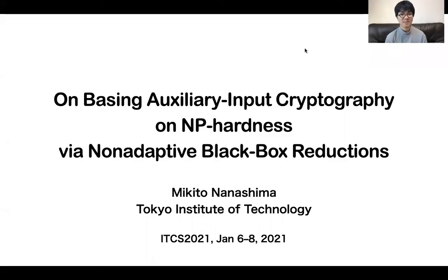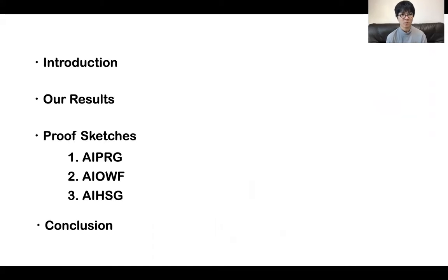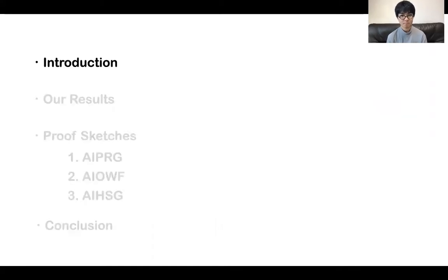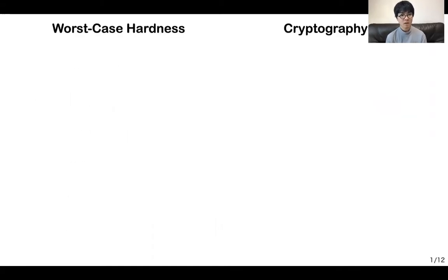Hello, my name is Mikito Nanashima. Today I'm going to talk about this topic: non-adaptive black box reductions for basing auxiliary input cryptography on NP-hardness. So let's begin with the introduction. This work is related to two fields: worst-case hardness in complexity theory and cryptography.